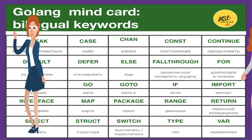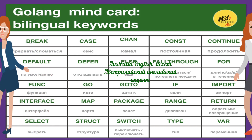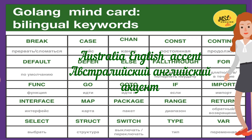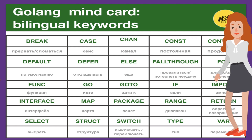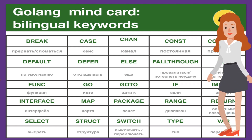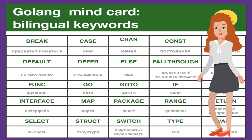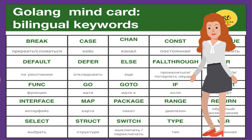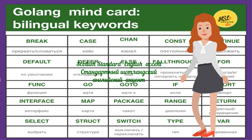Hi guys, I'm Karen from Australia. Let's get started to repeat 25 keywords of the Go language with my Australian English accent. Break. Case. Chan. Constant. Continue. Default. Defer. Else. Fallthrough. For. Func. Go. Goto. If. Import. Interface. Map. Package. Range. Return. Select. Struct. Switch. Type. Var.